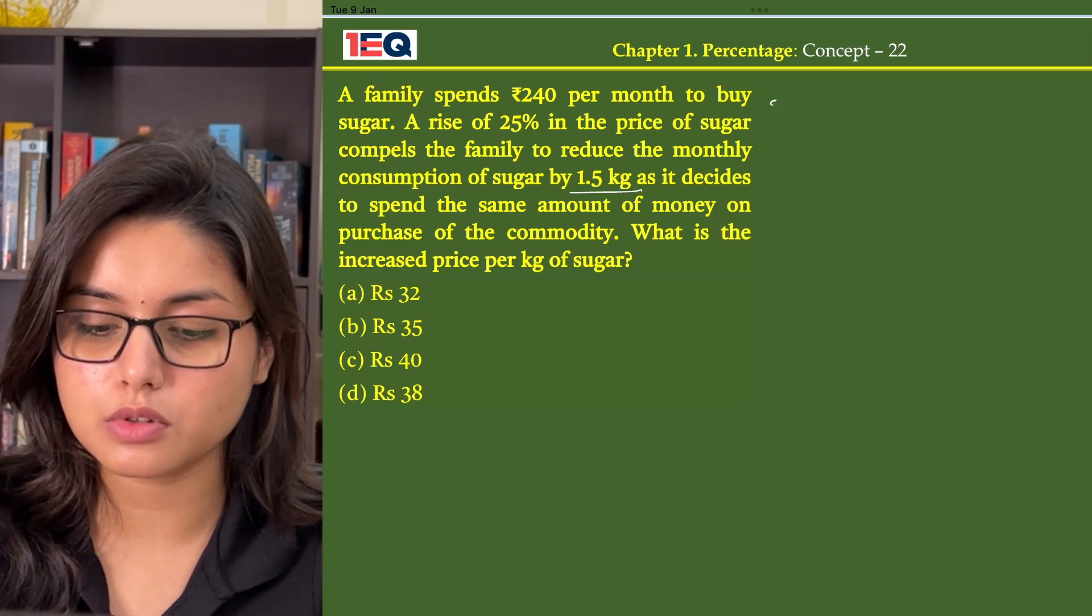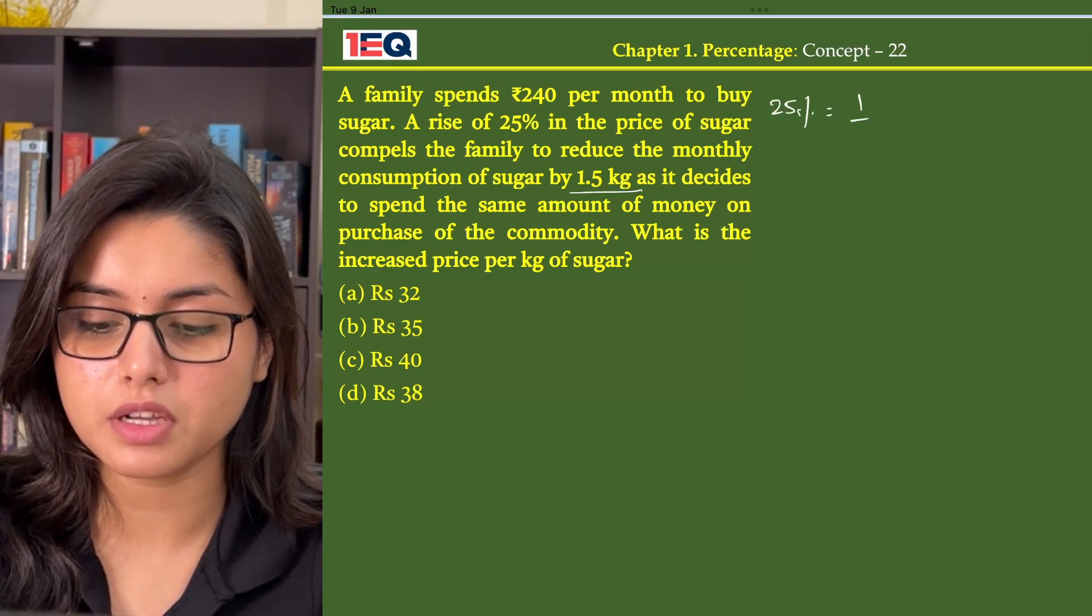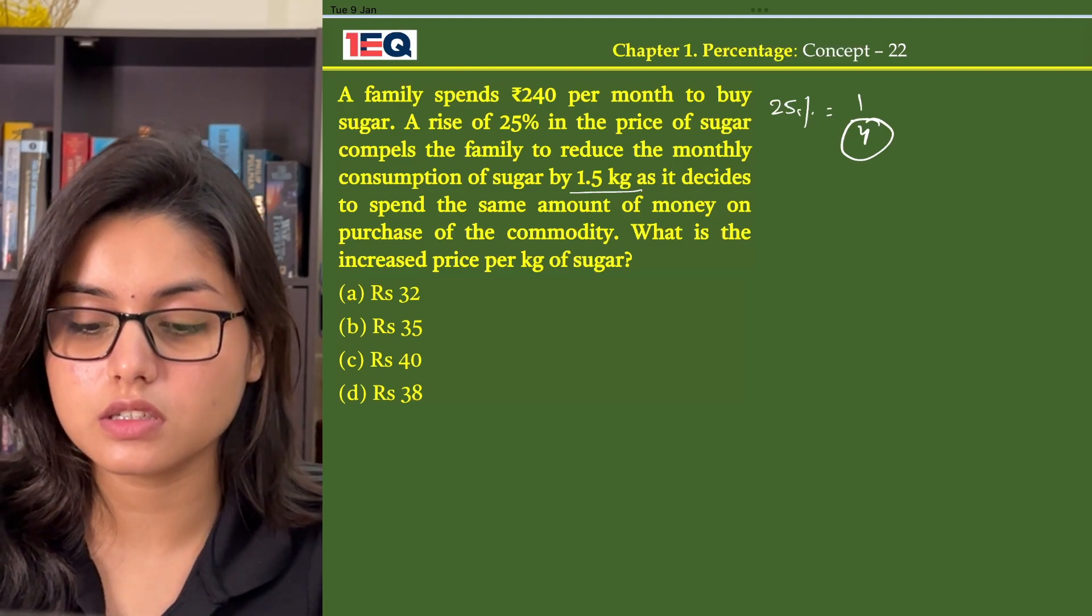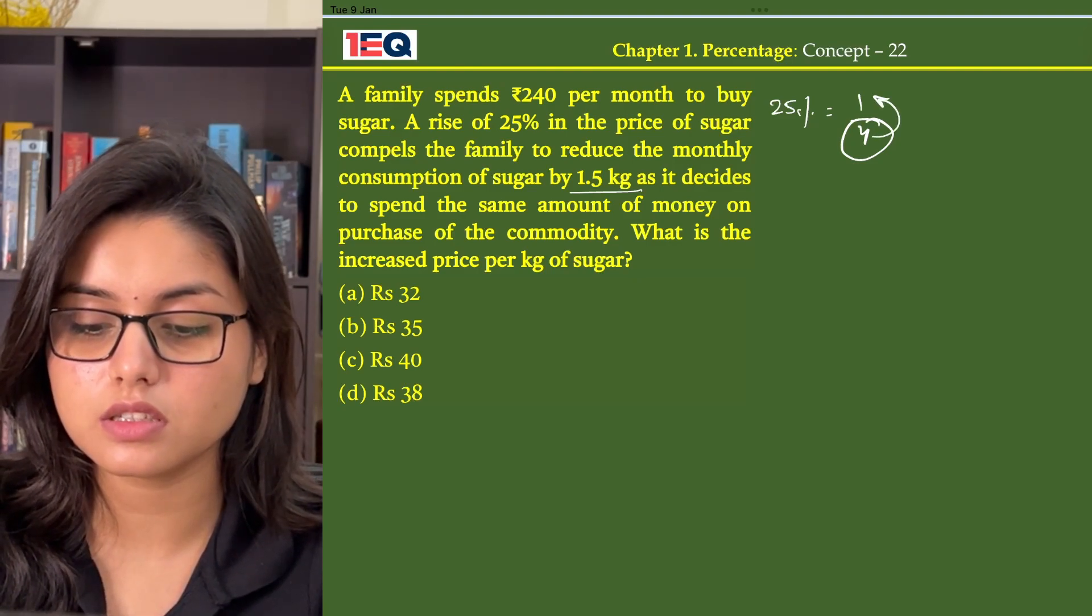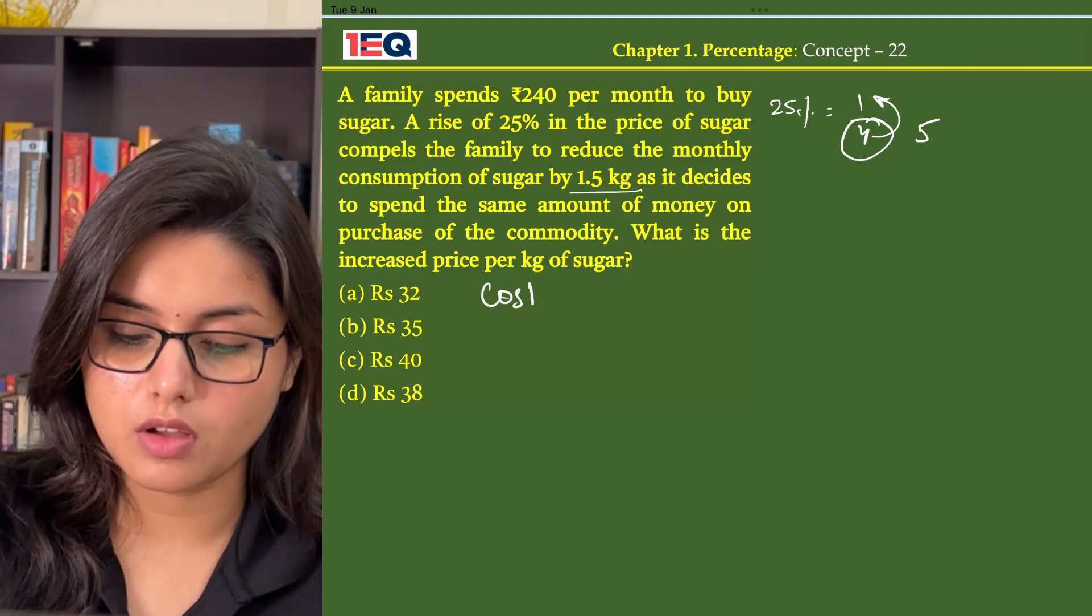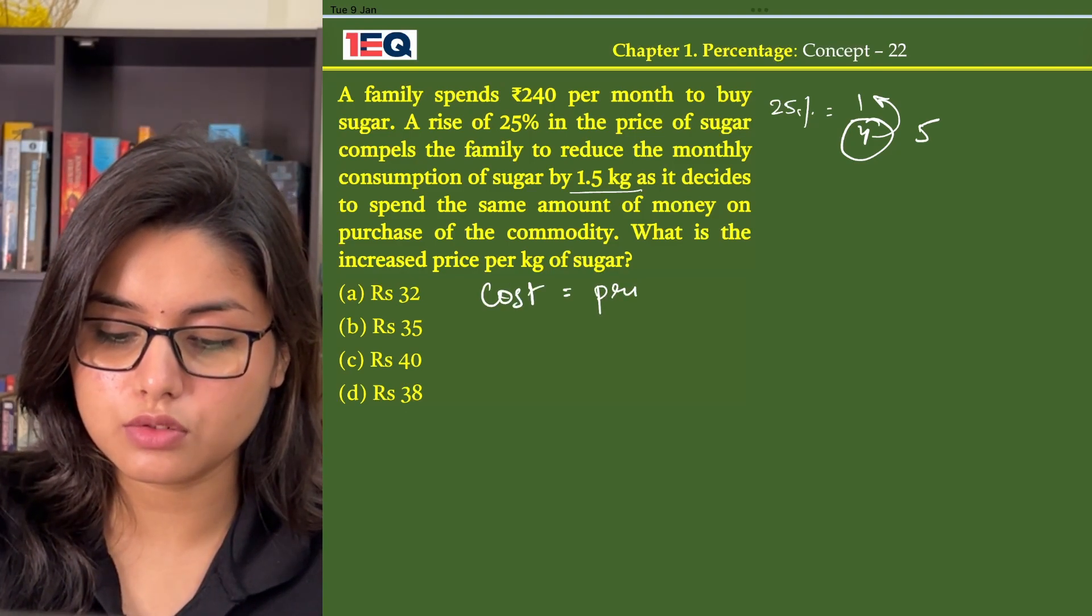So 25% rise means 25% is equal to 1 by 4. So if the cost of sugar was 4 initially, it is now increased by 1, that is it is now costing ₹5. Now what is cost? Cost is equal to price into quantity.